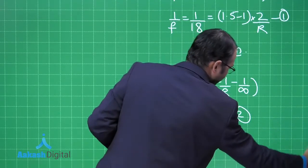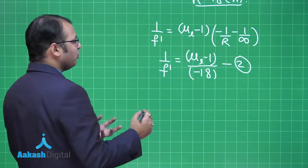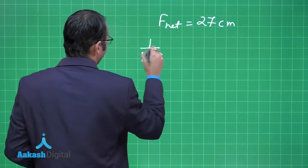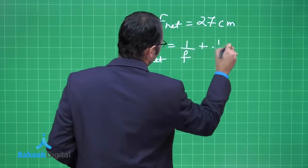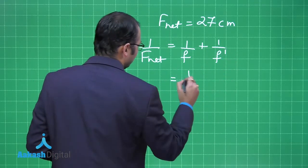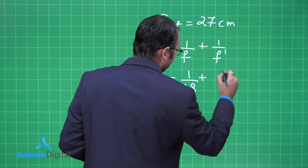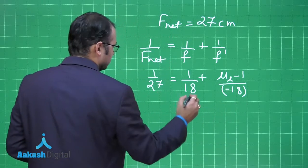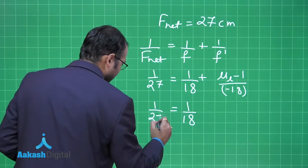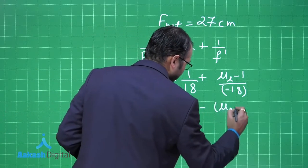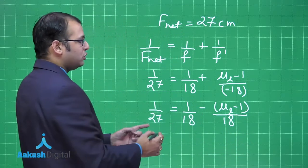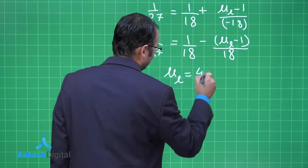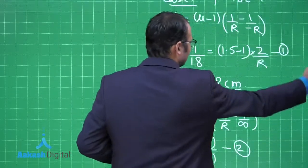The new combined focal length F_net is 27 centimeters. Using 1/F_net = 1/F + 1/F dash: 1/27 = 1/18 + (μL−1)(−1/18). Simplifying: 1/27 − 1/18 = −(μL−1)/18. Solving this gives μL = 4/3.